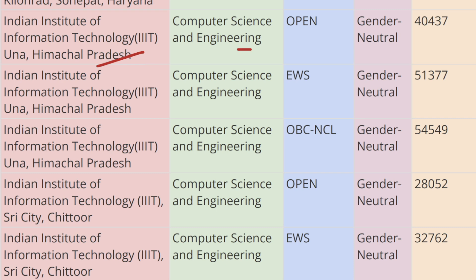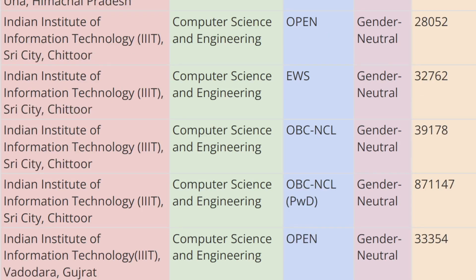Next in the list we have IIIT Himachal. As you can see on screen, for Computer Science Engineering, for Open category the cutoff rank is 40,437, for EWS category the cutoff rank is 51,377, and for OBC-CL category the cutoff rank is 54,549.